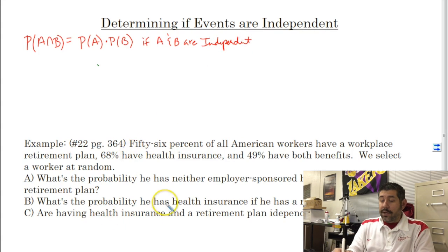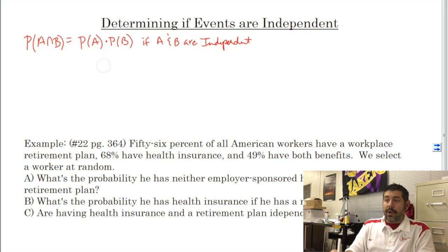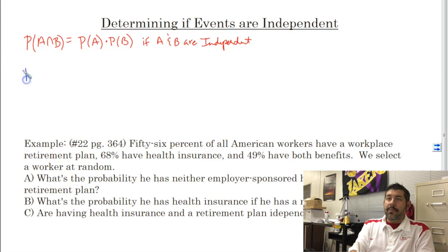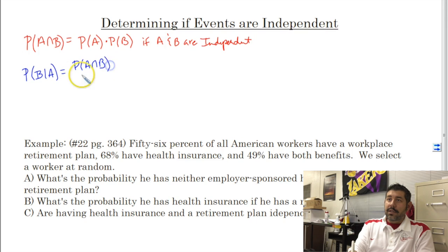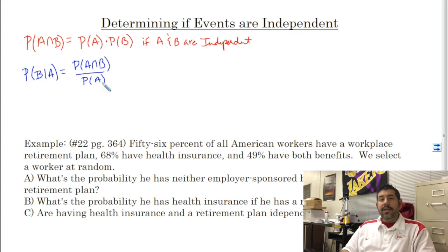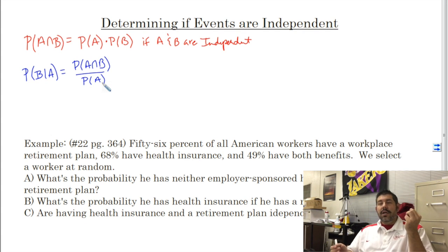So how do you tell if they are independent? Well, what we're going to do is use our idea of conditional probabilities to help us deal with that. We know that the probability of B given A is equal to the probability of A and B happening divided by the probability of A occurring. That's the formula from the last video about conditional probabilities.